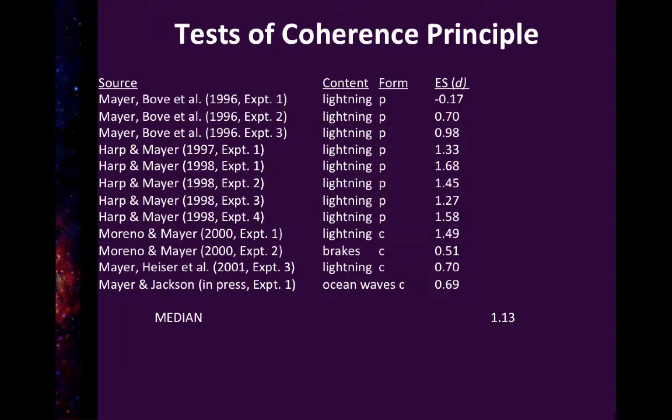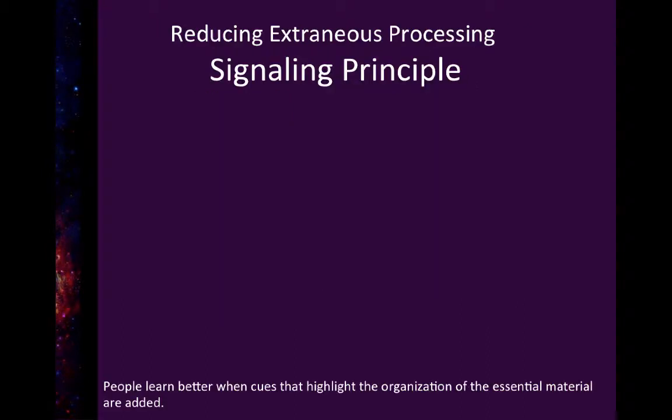There's been a lot of research on this coherence principle — the idea of providing too much information. Looking at 12 different studies, we see an effect size of 1.13. That's a huge effect size, so even very simple experiments in your planetarium would confirm something this robust.